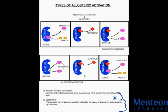A modulator molecule or an effector molecule can bind to a regulatory site during allosteric modulation and allosterically modulate the shape of the protein.